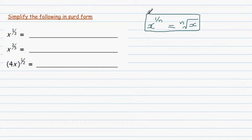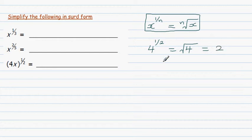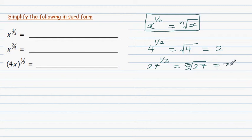For example, 4 to the power half is basically the square root of 4, and the square root of 4 is 2. Similarly, 27 to the power 1 over 3 means the cube root of 27. The cube root of 27 — you can use a calculator — gives you 3.